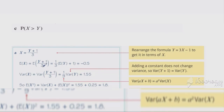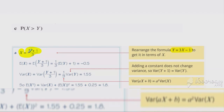In part a we're required to find the expected value of x squared and the expected value of x. We know that x is equal to (y plus 1) over 3 — we've rearranged y equals 3x minus 1 to make x the subject. Using our formula for expectation of a linear function, that gives us the expected value of x as minus 0.5.